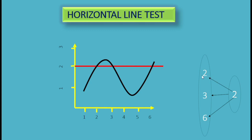The one-to-one concept means that for every element, there is a unique image. Each element must have a unique image. When a horizontal line intersects the curve at more than once, it produces many pre-images, which does not reflect the function being one-to-one.